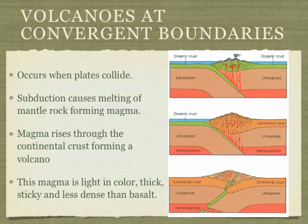What about volcanoes at convergent boundaries? Convergent boundaries are any time two plates collide — two oceanic crust plates, two continental crust plates, or an oceanic crust and a continental crust crashing into each other. Subduction of one plate under another causes melting of the mantle rock, which forms magma. The magma rises through the continental crust and forms a volcano. This magma is different from divergent boundary magma: it's lighter in color, really thick and sticky, but less dense than basalt.